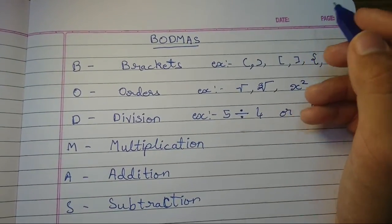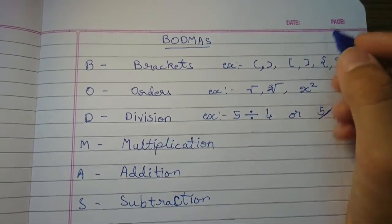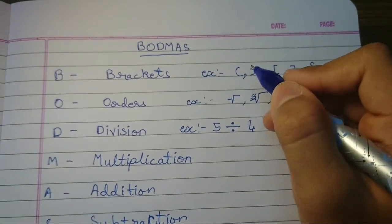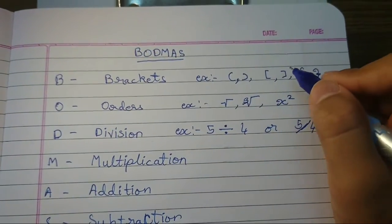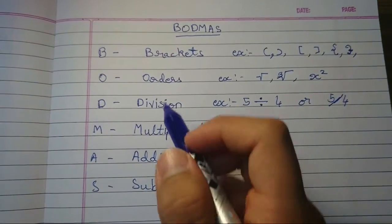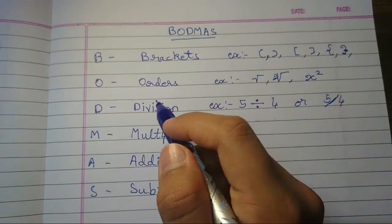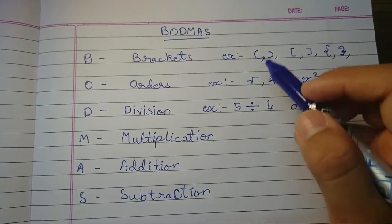So here for example, bracket, you know this bracket, and this also, and this also - flower brackets, curly brackets they say. Okay, so Order, as I told you before, this is a symbol of square roots and cube roots, and you know exponents.